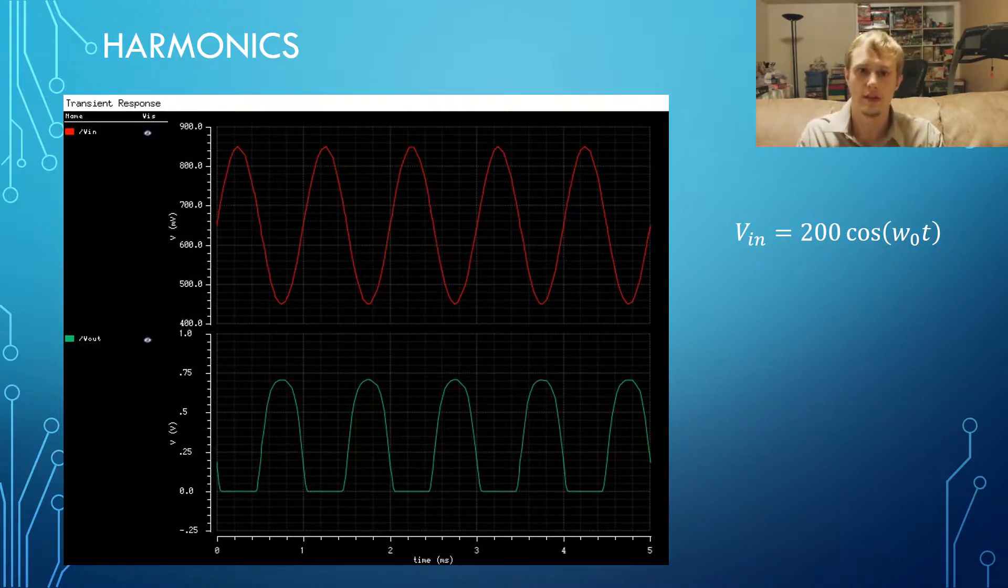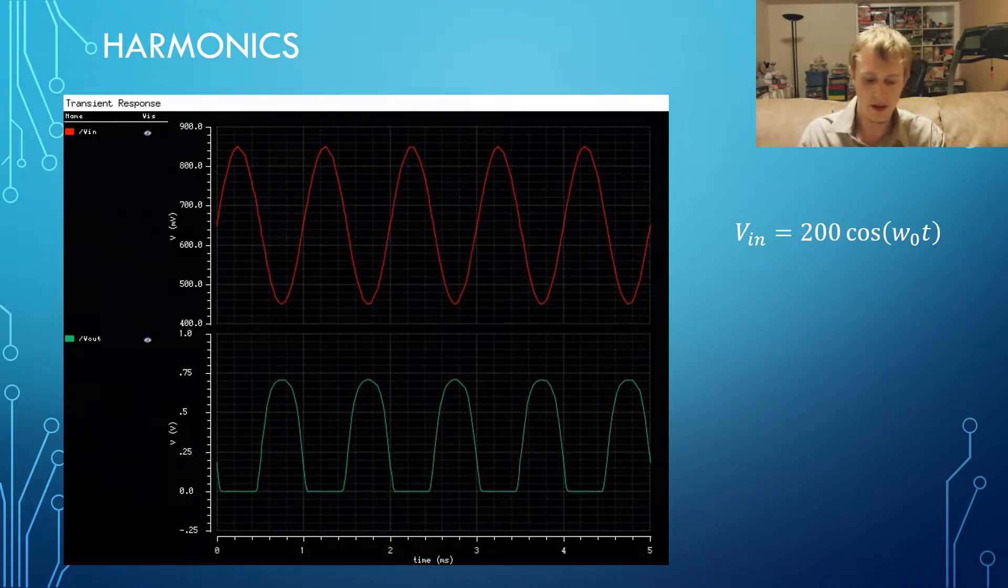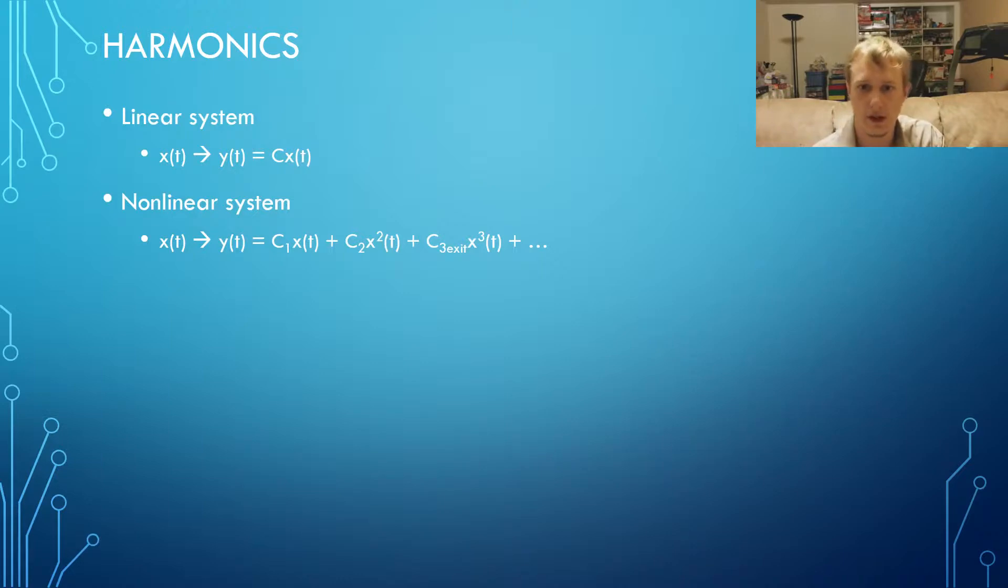As the input increased, these harmonics had a much larger effect on the output, causing the shape of the output to change. These harmonics show up in the output because this circuit is non-linear.